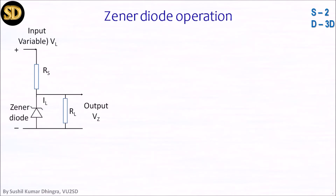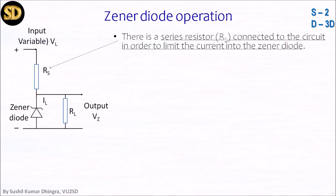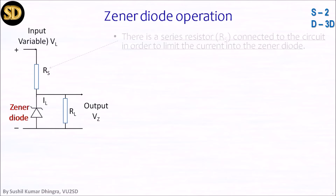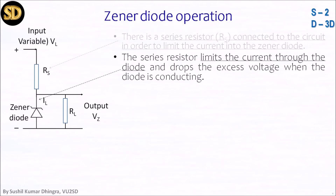How does it work? I have shown a simple diagram on your screen. When the input voltage is coming in, RS — the series resistance — is connected to the circuit in order to limit the current into the Zener diode, which could otherwise damage it if the current is too high. So this is used at very low current. The Zener diode is connected in the circuit, and the series resistor limits the current through the diode and drops the excess voltage when the diode is conducting.